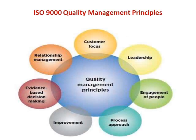This graphical representation shows the ISO 9000 quality management principles. There are seven principles in total: customer focus, leadership, engagement of people, process approach, improvement, evidence-based decision making, and relationship management. We will discuss each one by one.